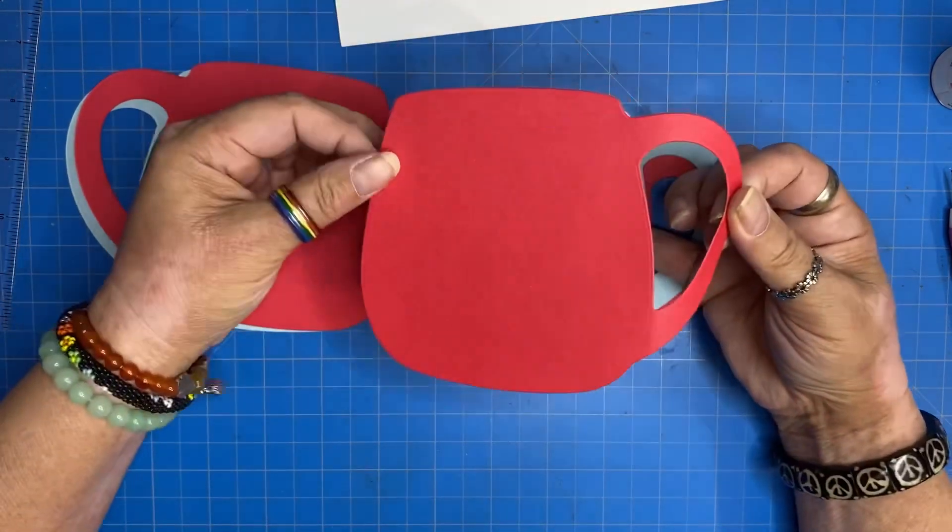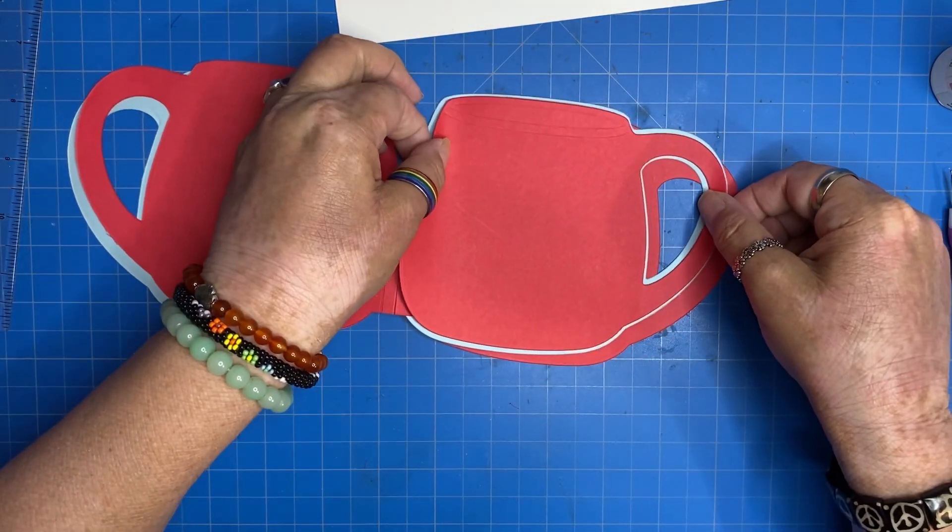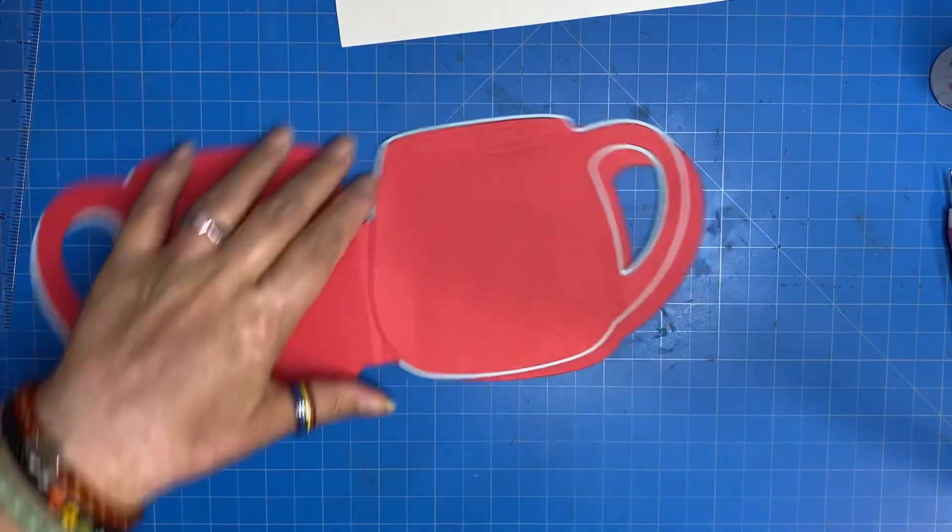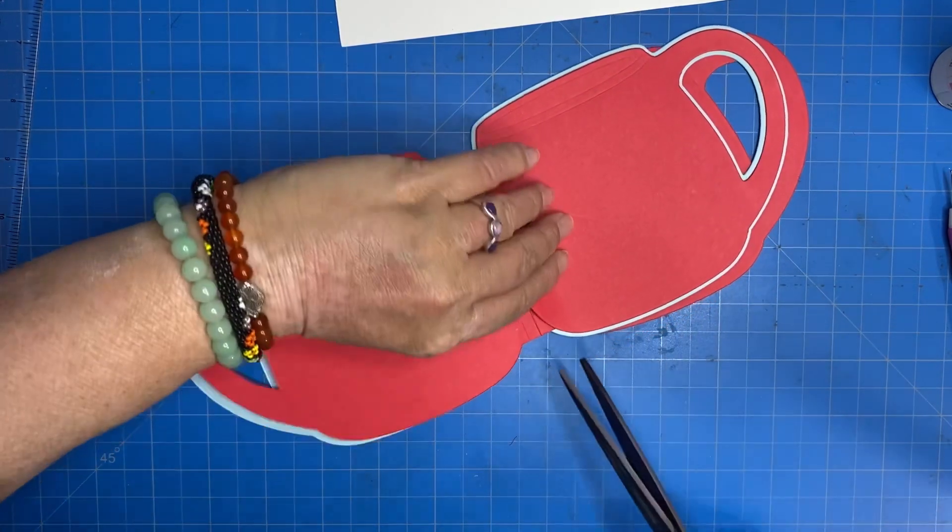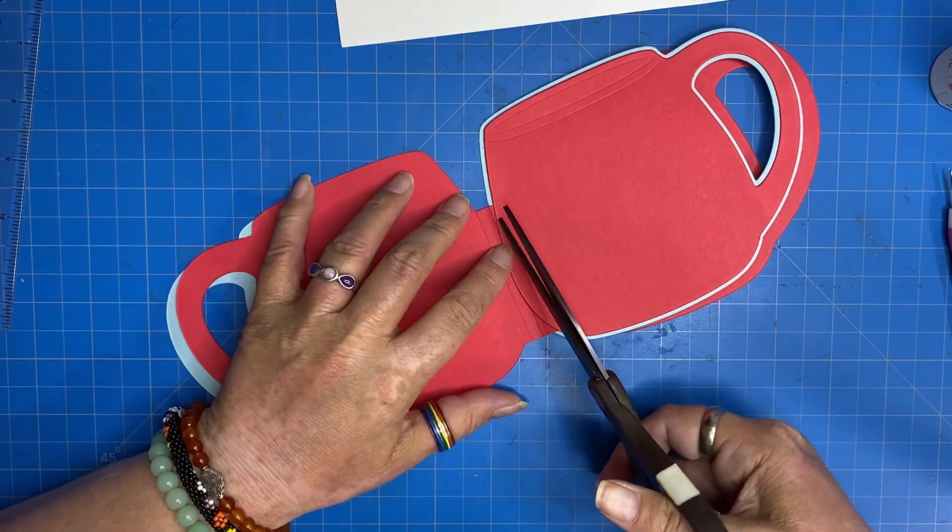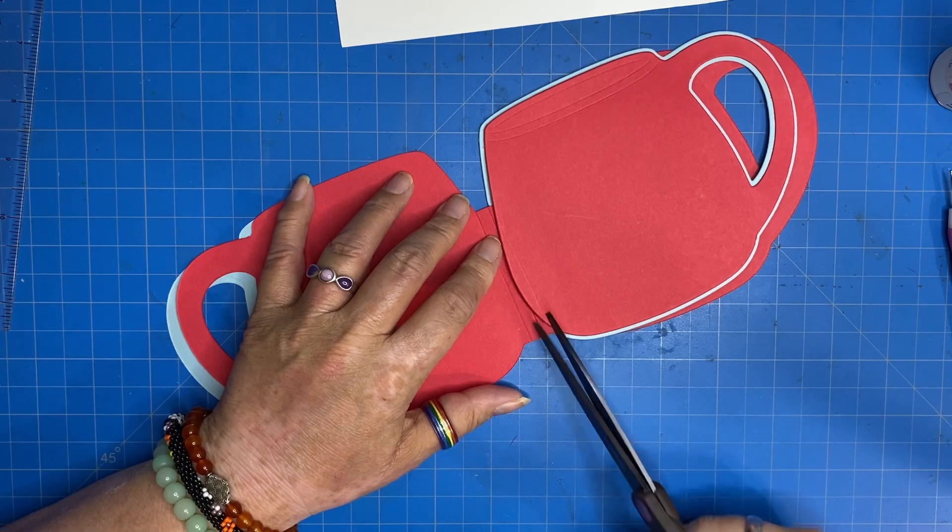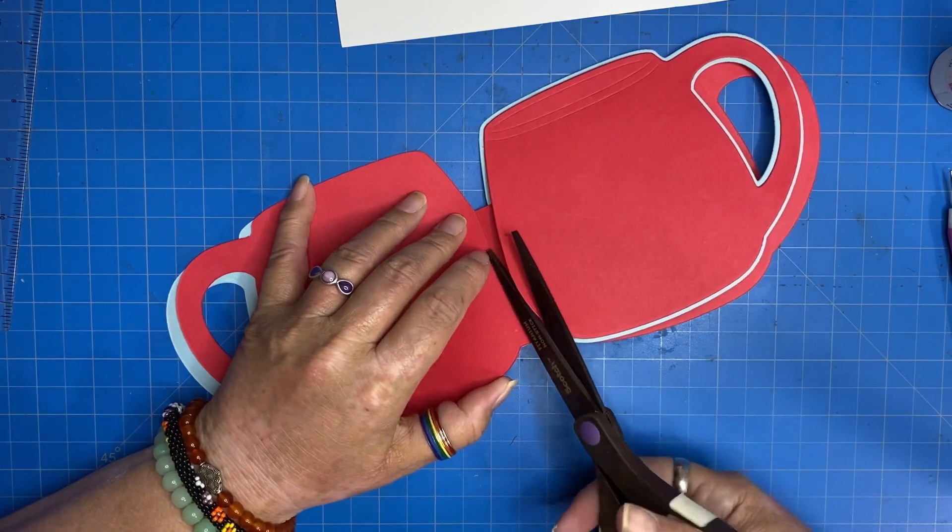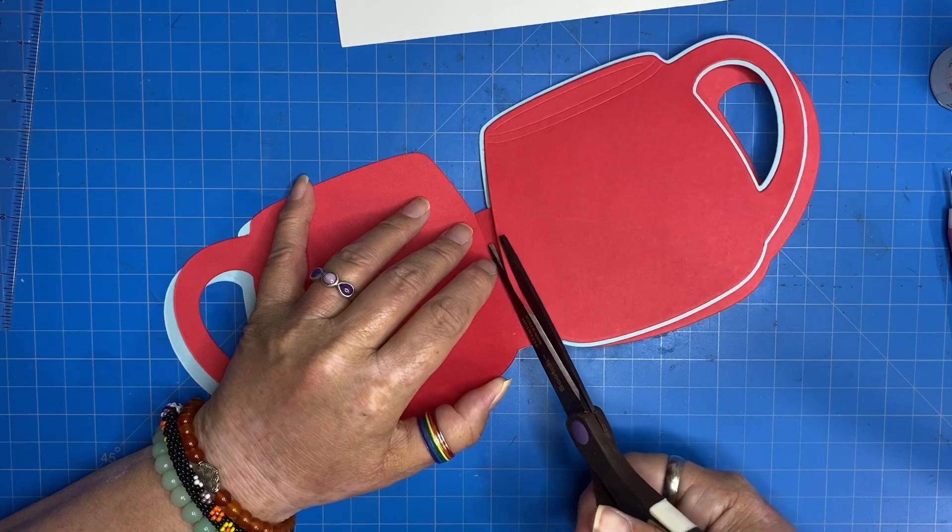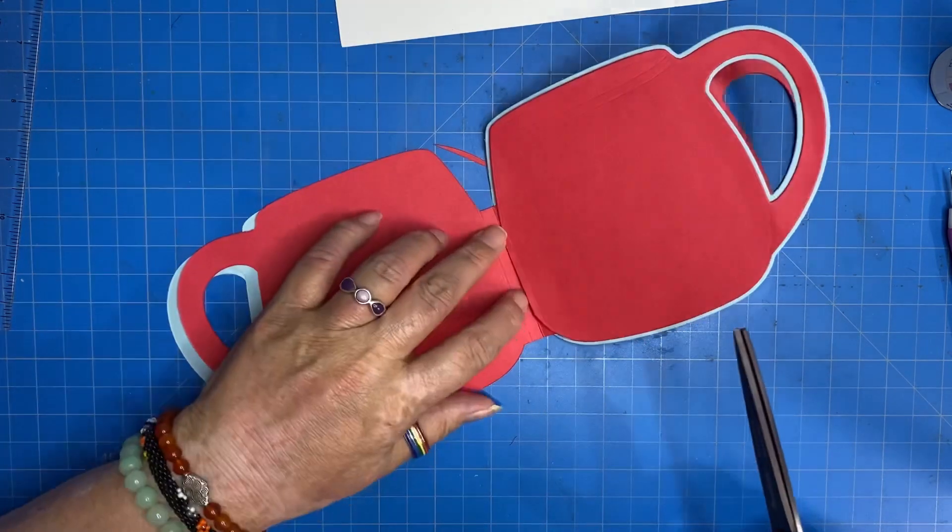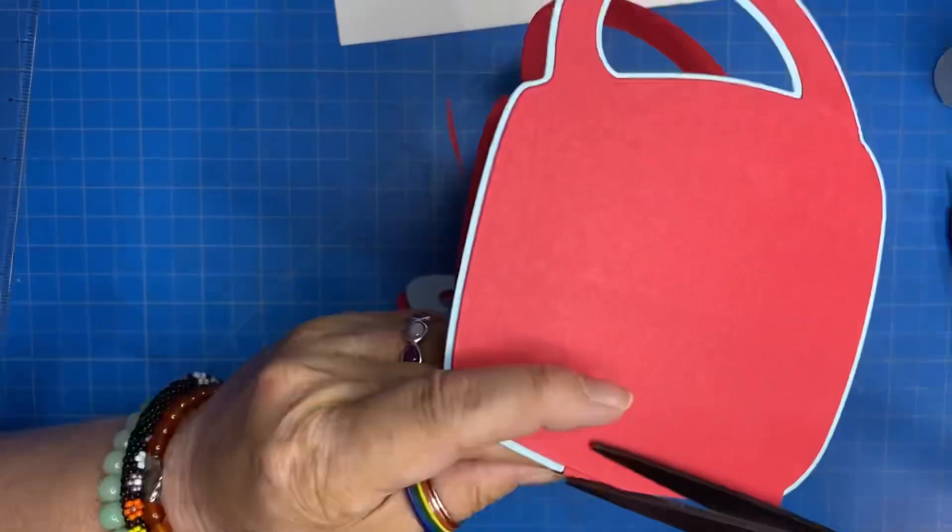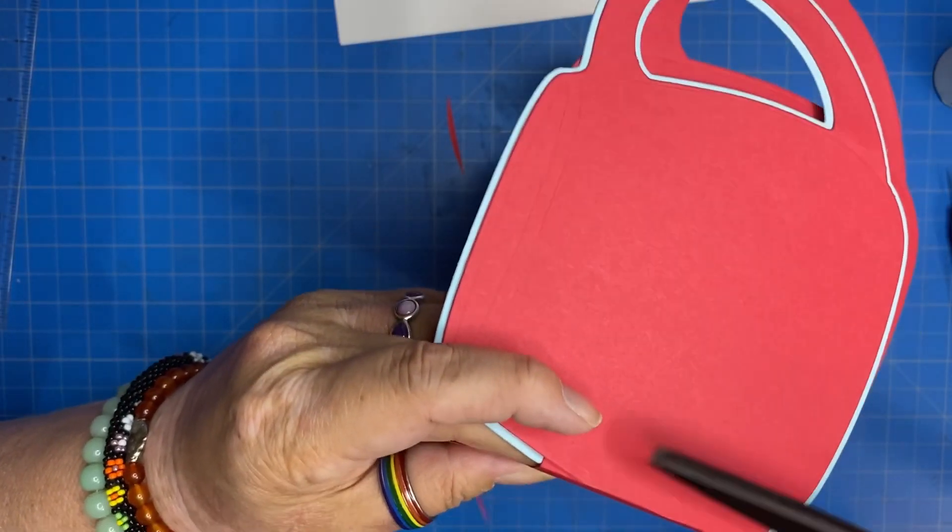Let's try this on a different color. So here I would just glue this page in. And I would eyeball where the line is, the score line. And then I would cut. Kind of have to work it a little bit. There we go.